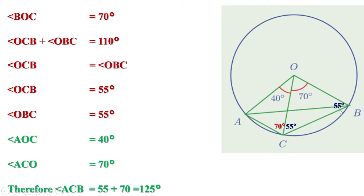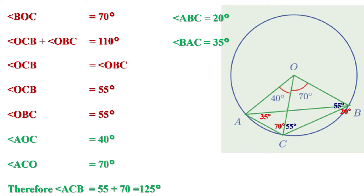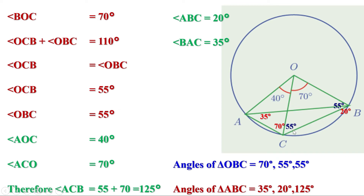Angle ABC is the angle made by arc AC on its alternate arc, so it equals half the central angle AOC. Since AOC is 40 degrees, angle ABC equals 20 degrees. The third angle, BAC, equals 180 minus (20 plus 125), which is 180 minus 145, or 35 degrees. The angles of triangle OBC are 70, 55, and 55 degrees. The angles of triangle ABC are 35, 20, and 125 degrees.